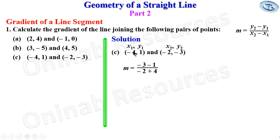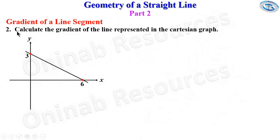So we have the numerator to be negative 4 over 2. Negative 4 divided by 2 gives negative 2, which is the gradient of the line joining the two points in problem 1C. That's all for problem 1.